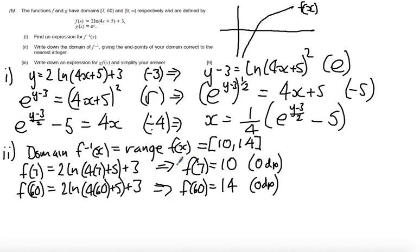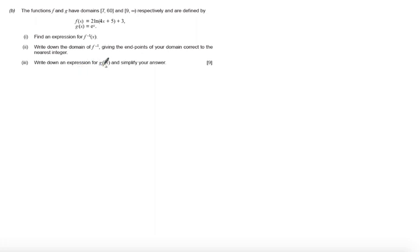So let's now look at part 3 of this question. Part 3 says to write down an expression for gf(x) and simplify your answer. So what we're going to do here is I am going to substitute f(x) into g(x). Remember, the way to remember how to substitute these is you read it from right to left, not left to right. So gf(x) is given by e^(2ln(4x+5)+3). So it says simplify your answer.